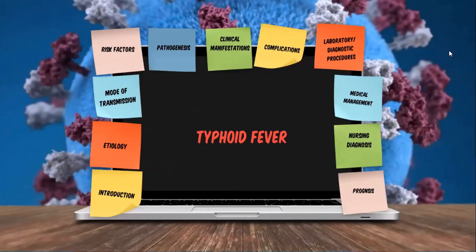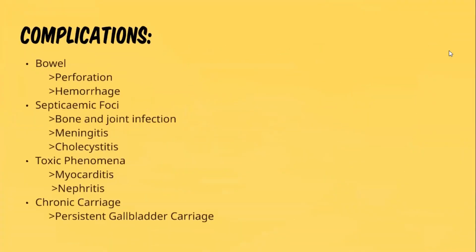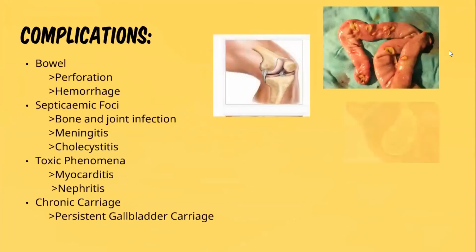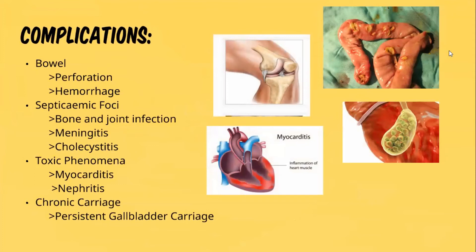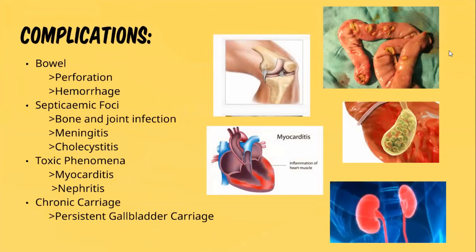The complications of typhoid fever include perforation and hemorrhage of the bowel, bone and joint infection, meningitis, and cholecystitis, which is inflammation of the gallbladder. We also have myocarditis, which is inflammation of the heart muscles, pericarditis, and persistent gallbladder carriage.